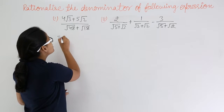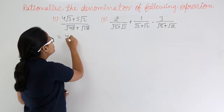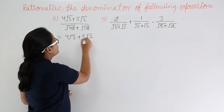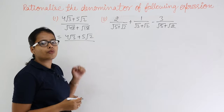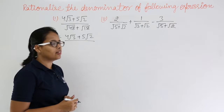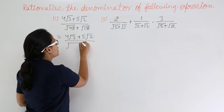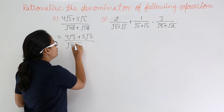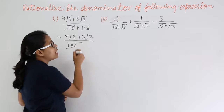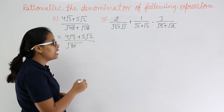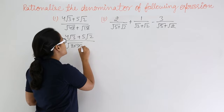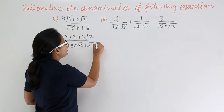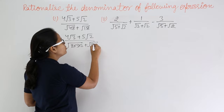How are you going to solve this? You keep the numerator as it is. Now solve √48. You can write √48 as √(8×6), since 8×6 = 48, and you can write 6 as 3×2. Then write √18 as √(9×2).